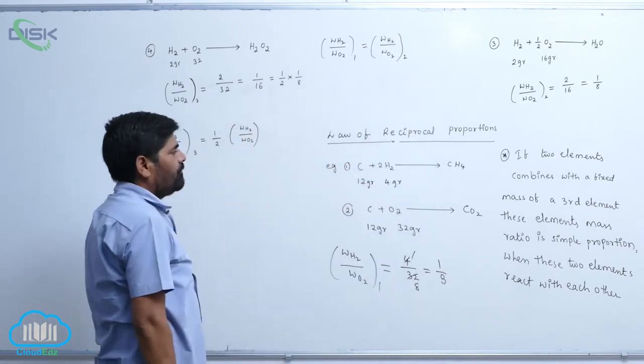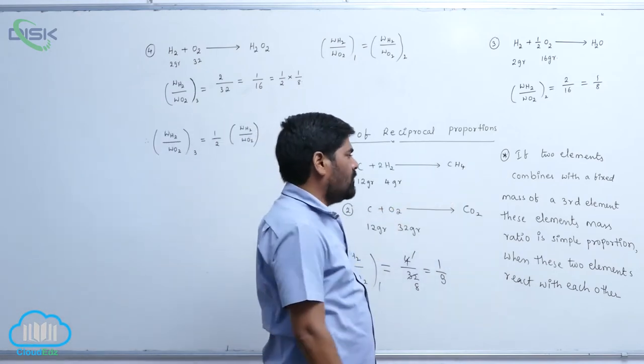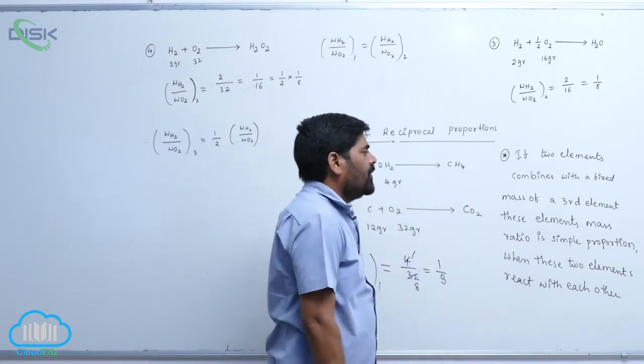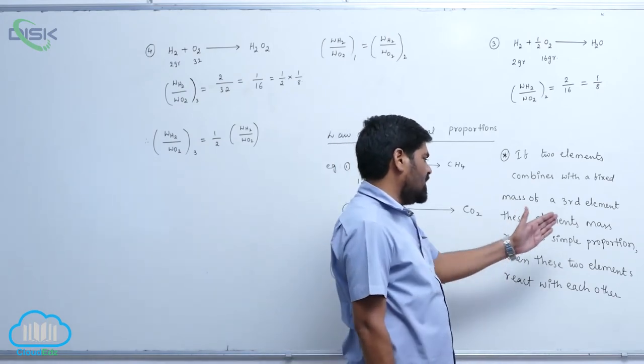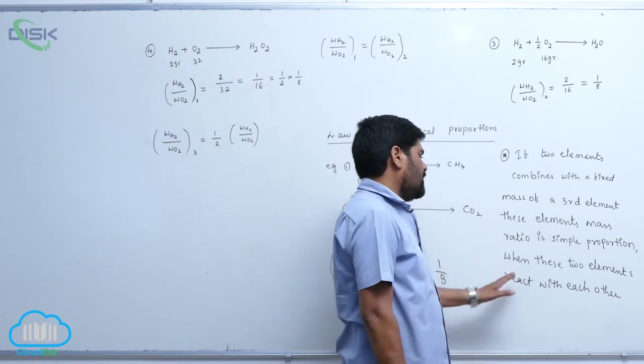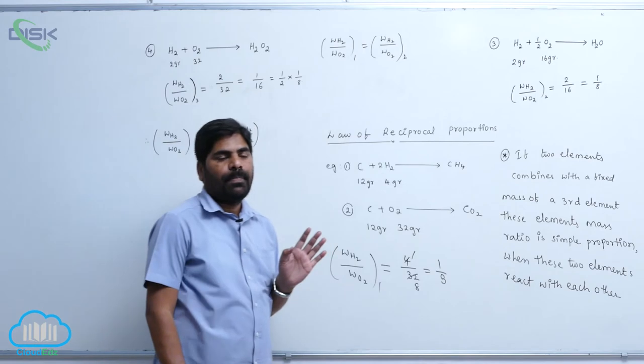That is the reason why if two elements combined with a fixed mass of the third element, these elements mass ratio is in simplest proportion when these two elements are reacted with each other.